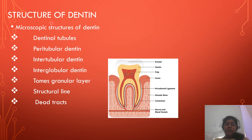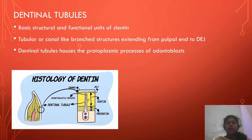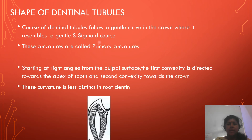Coming to the structure of dentine, the microscopic structure includes dentinal tubules, peritubular dentine, intertubular dentine, interglobular dentine, Tom's granular layer, structural lines, and dead tracks. Dentinal tubules are the basic structural and functional unit of dentine. These are tubular or canal-like branched structures extending from the pulp to the dentino-enamel junction. The dentinal tubule houses the protoplasmic processes of odontoblasts. Dentinal tubules are not straight but have a gentle S-shape, with two curvatures in opposite directions called primary curvatures.